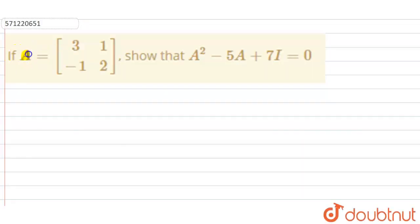Hello everyone. In this question, if matrix A equals 3, 1, minus 1, 2, then show that A squared minus 5A plus 7I equals 0.